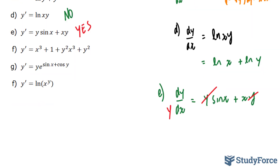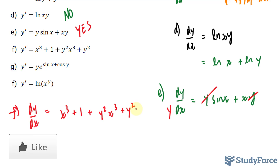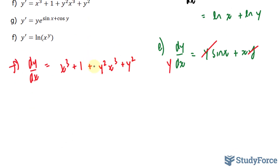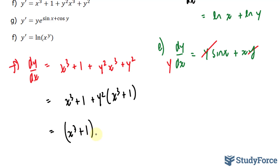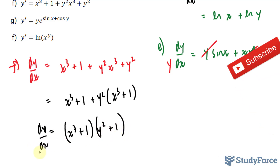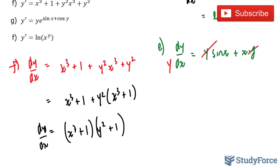In question (f), we have y prime plus x cubed plus 1 plus y squared times x cubed plus y squared. Rewriting as dy over dx equal to x cubed plus 1 plus y squared x cubed plus y squared, I factor out y squared to get y squared times (x cubed plus 1). The remaining term also has (x cubed plus 1), so factoring that out gives (x cubed plus 1)(y squared plus 1). Dividing both sides by (y squared plus 1) and multiplying by dx means this one is separable.